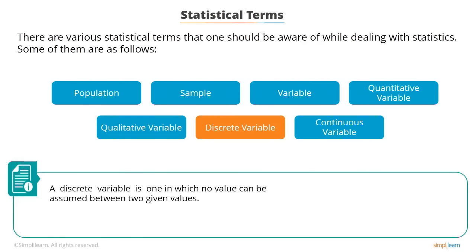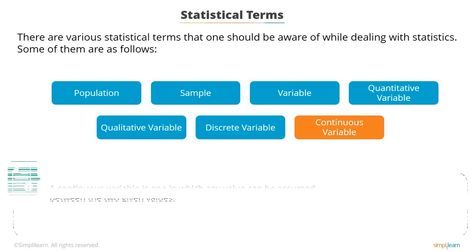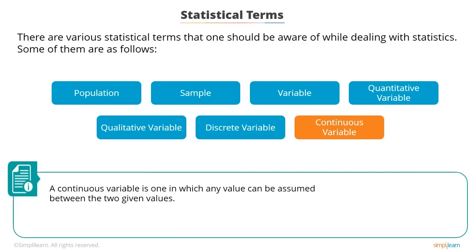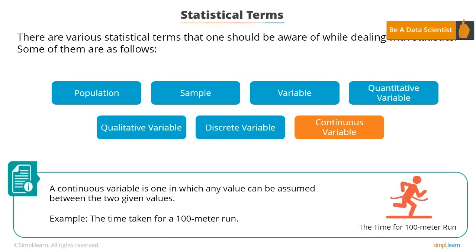A discrete variable is one in which no value can be assumed between two given values — for example, the number of children in a family. A continuous variable is one in which any value can be assumed between two given values — for example, the time taken for a 100-meter run.